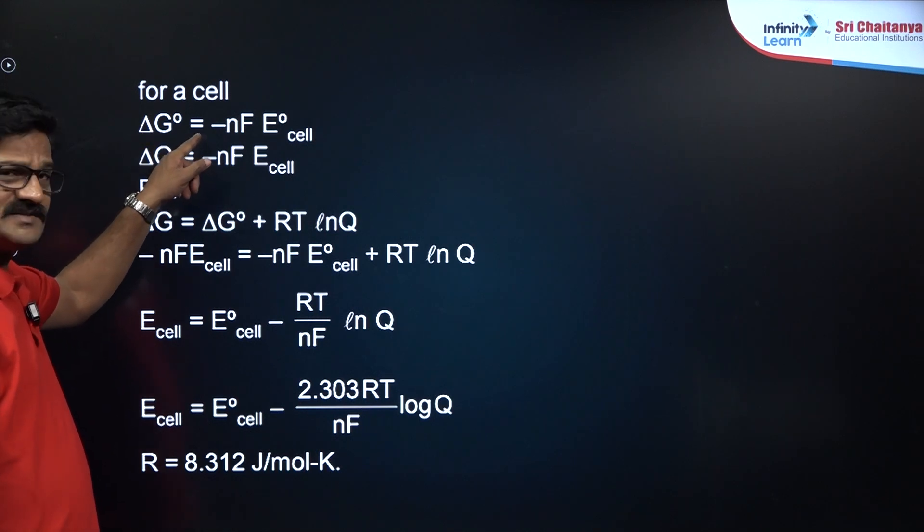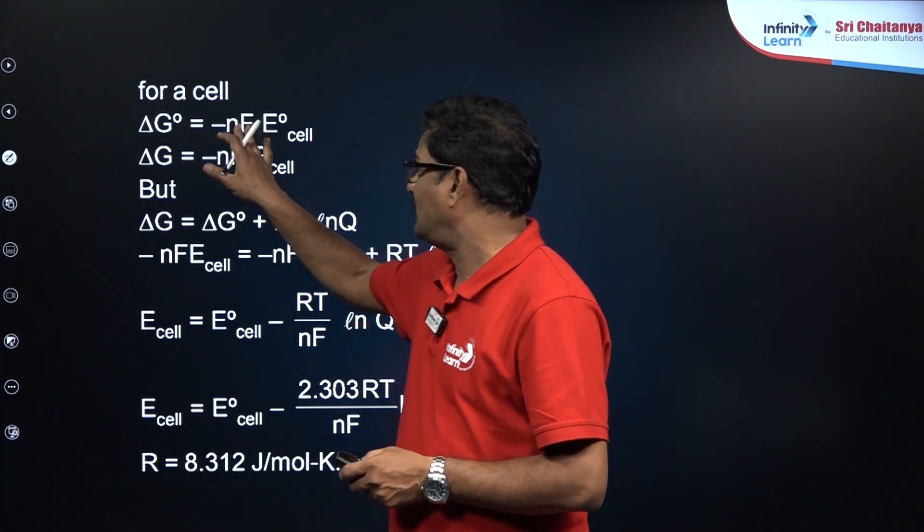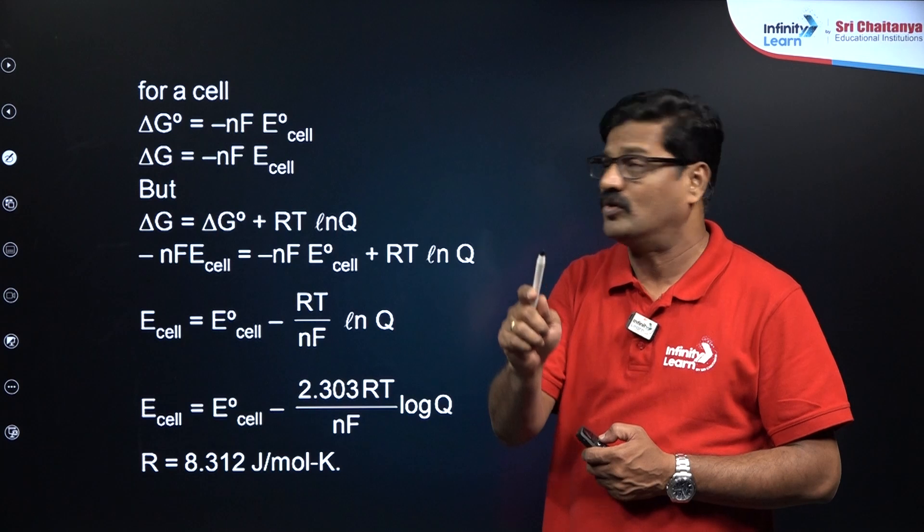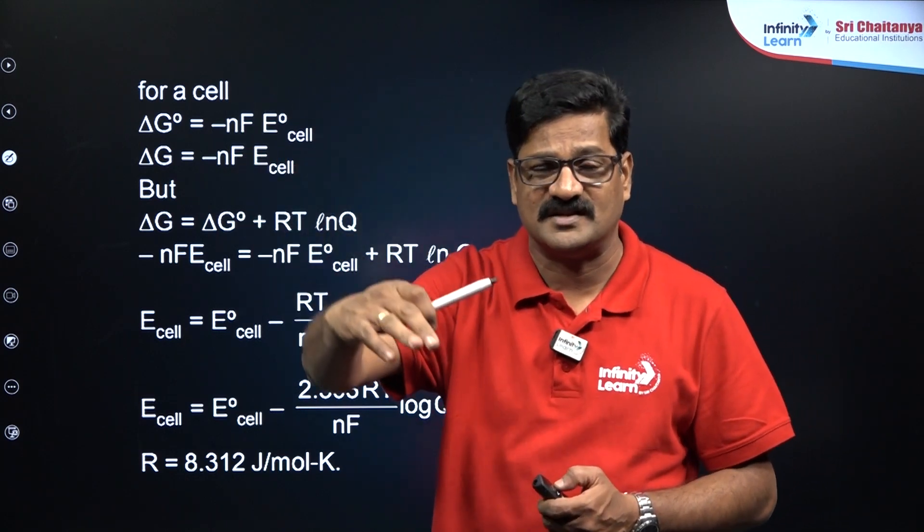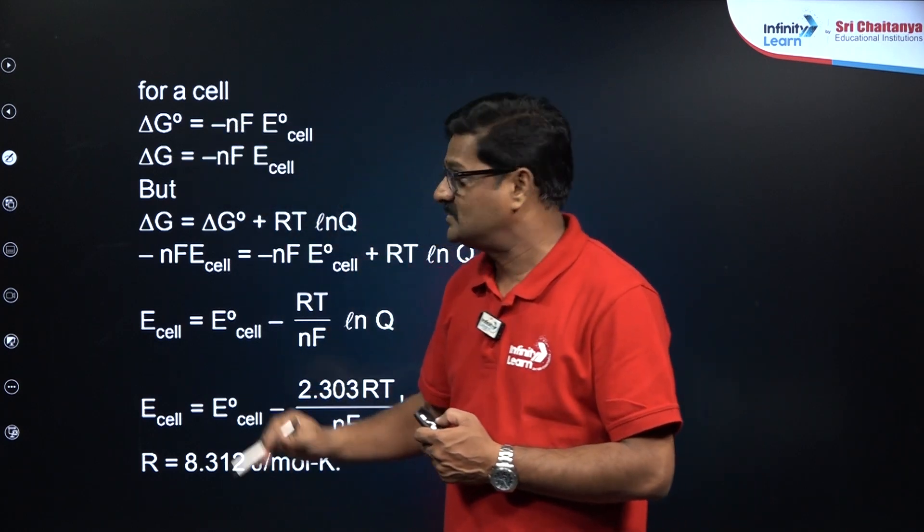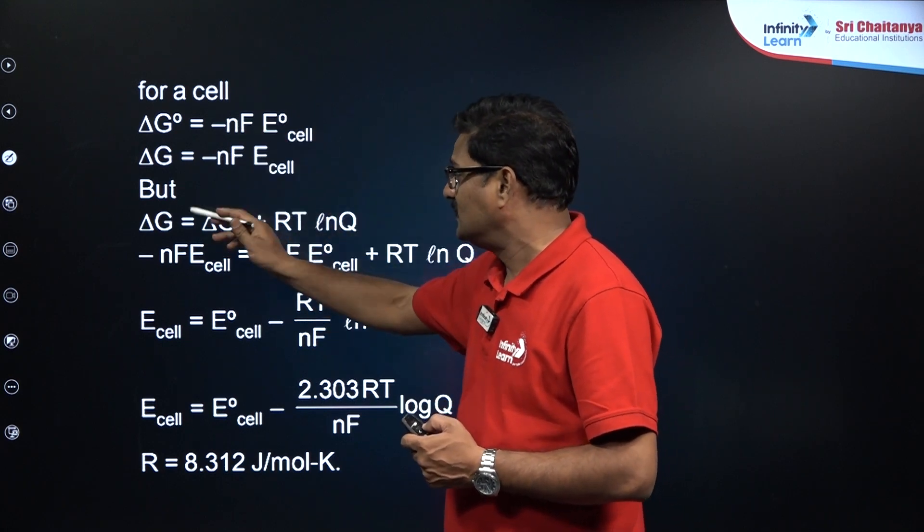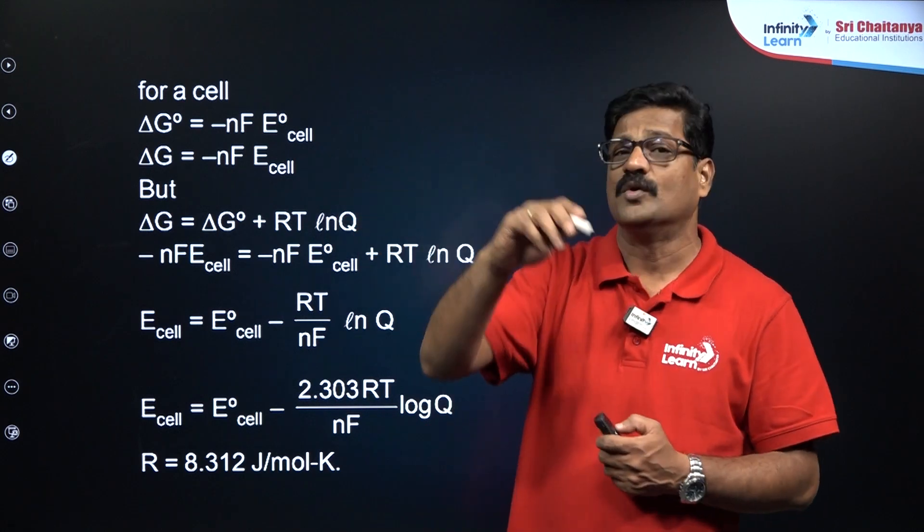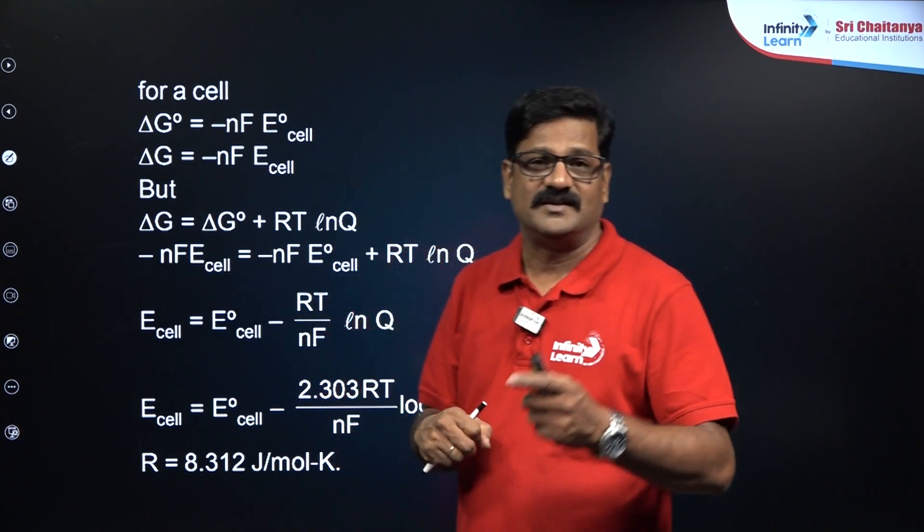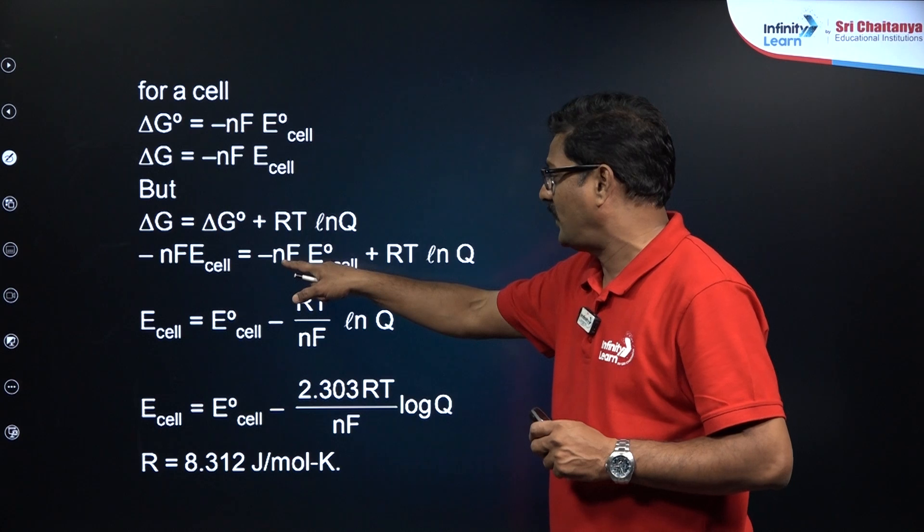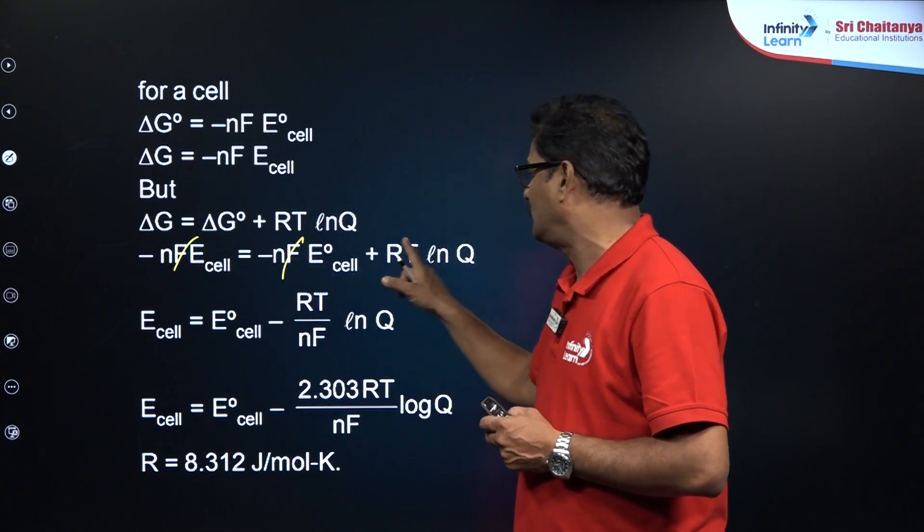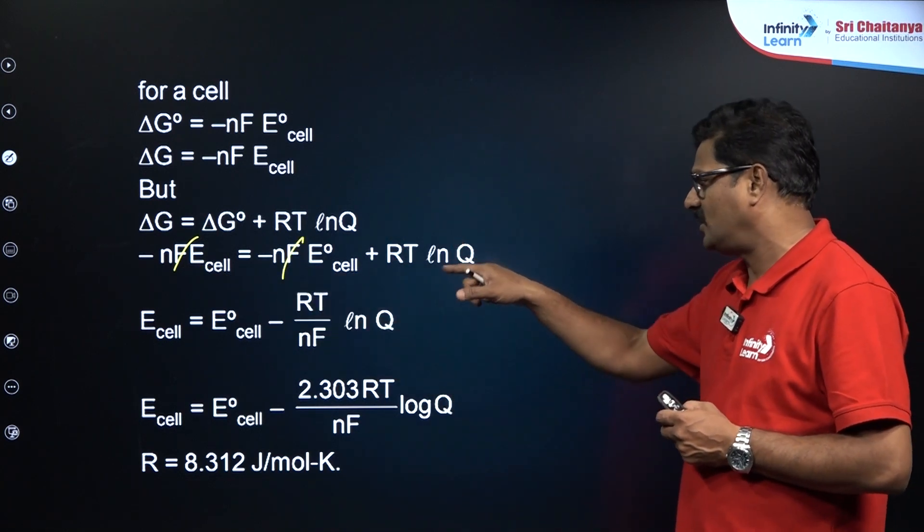Delta G naught equals minus nFE naught. F is Faraday's constant, 96,500 coulombs, and n is the number of electrons involved in that redox change in the electrochemical cell. Delta G at standard condition, delta G at given conditions equals minus nFE cell. Delta G equals delta G naught plus RT ln Q. This delta G is minus nFE cell and delta G naught equals minus nFE naught cell plus RT ln Q. You take F getting cancelled and E cell is going to be E naught cell minus RT by nF ln Q.